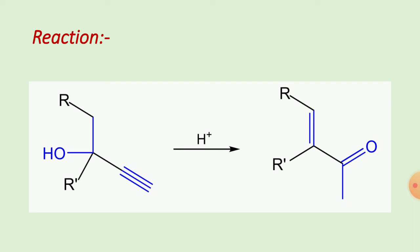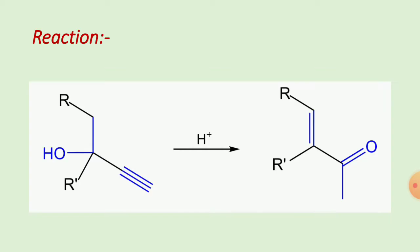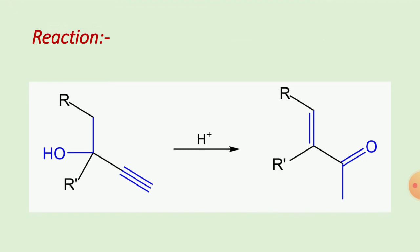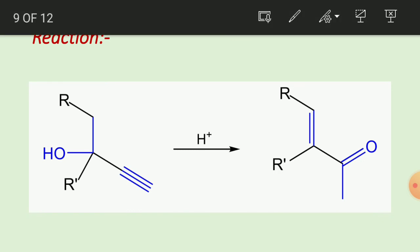Looking at the reaction: under H⁺ conditions, there is removal of a water molecule, hydrolysis takes place, and a ketone is formed. The OH group is protonated under H⁺ conditions, then removal of the H₂O molecule occurs, forming the carbocation intermediate, followed by hydrolysis.